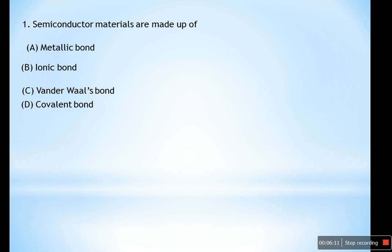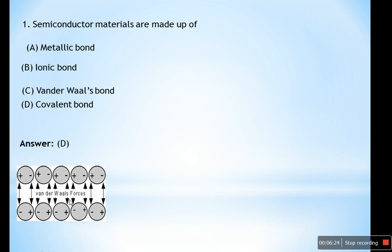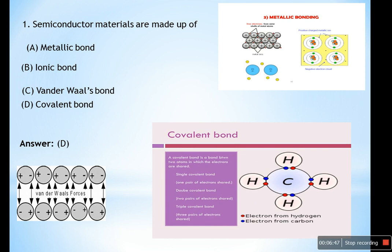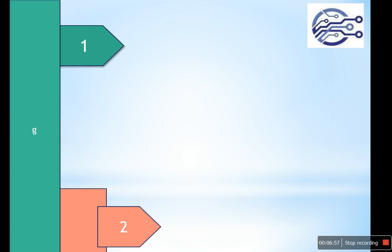The van der Waals bond involves weak interactions caused by momentary changes in the electron density of molecules. The covalent bond — illustrated by hydrogen and carbon atoms sharing electrons — is the correct answer. Semiconductor materials are made up of covalent bonds.